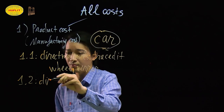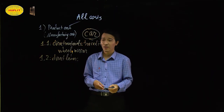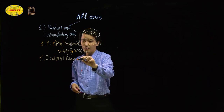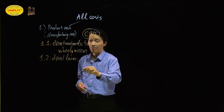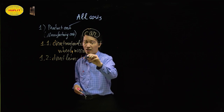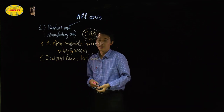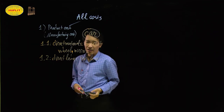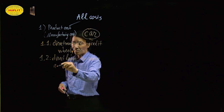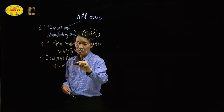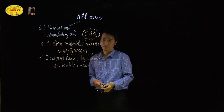The next one is called direct labor. Direct labor is the labor cost of the people who actually make the product — in this example, the car. This means it is the salary paid to the employees who actually work on the car, such as the assembly workers on the factory floor.